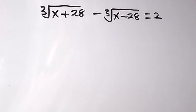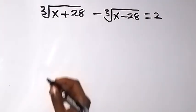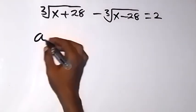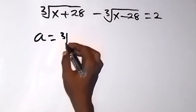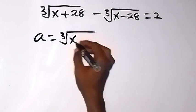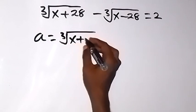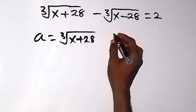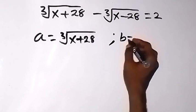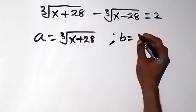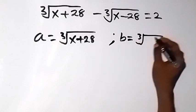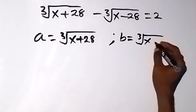Hello y'all, thank you for joining us. Here we want to solve this problem. From here, let's use a letter to represent each thing we have on the left. We can say let a be equal to the cube root of x plus 28, and let b be equal to the cube root of x minus 28.